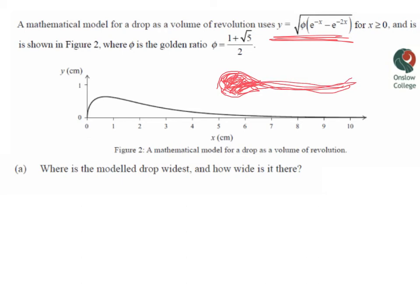This function just gives me the height. So I'm working in two dimensions. There's not really that much to the function. It is y equals the square root of phi. Phi is the golden ratio. Times e to the negative x minus e to the negative 2x. So not too nasty at all. We're asked where is the modelled drop the widest and how wide is it there. We can see on the graph that we're looking for the exact x coordinate of that point there. The width of the drop at that point will be twice the y coordinate there. So we're going to look for those two things.